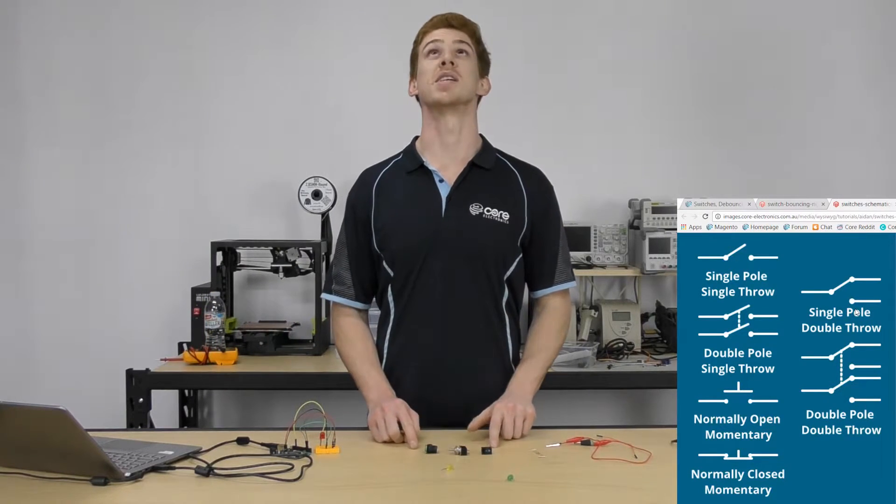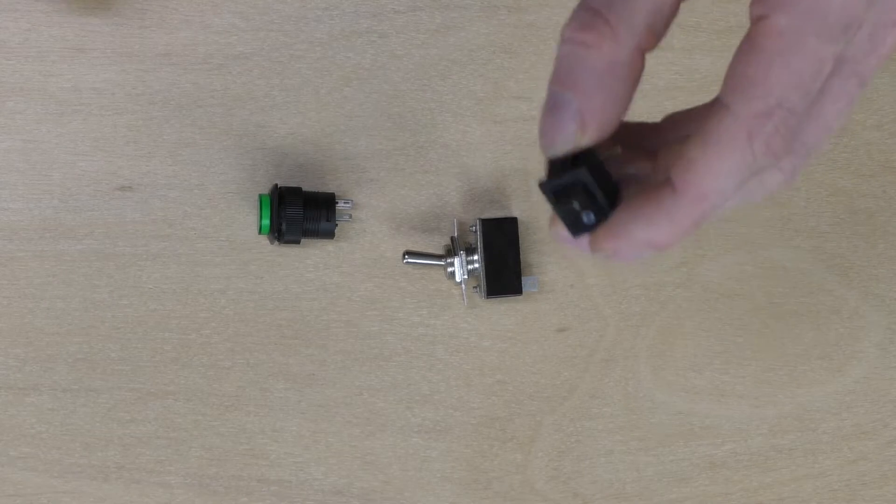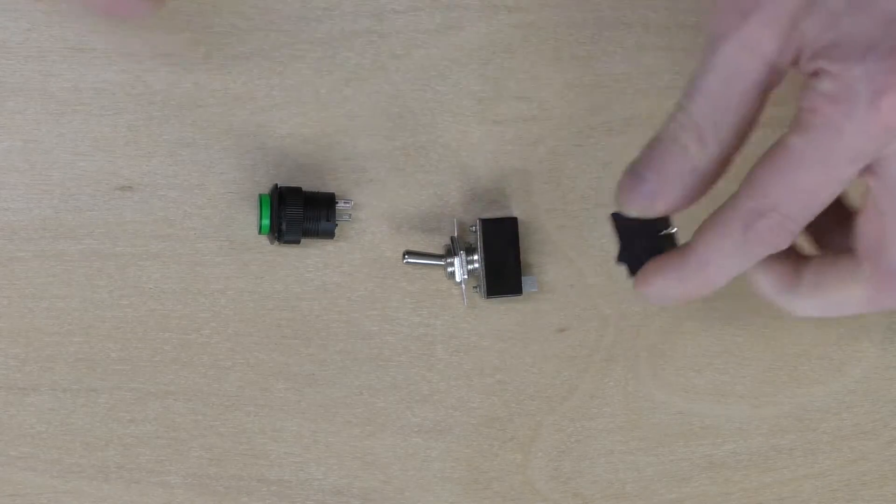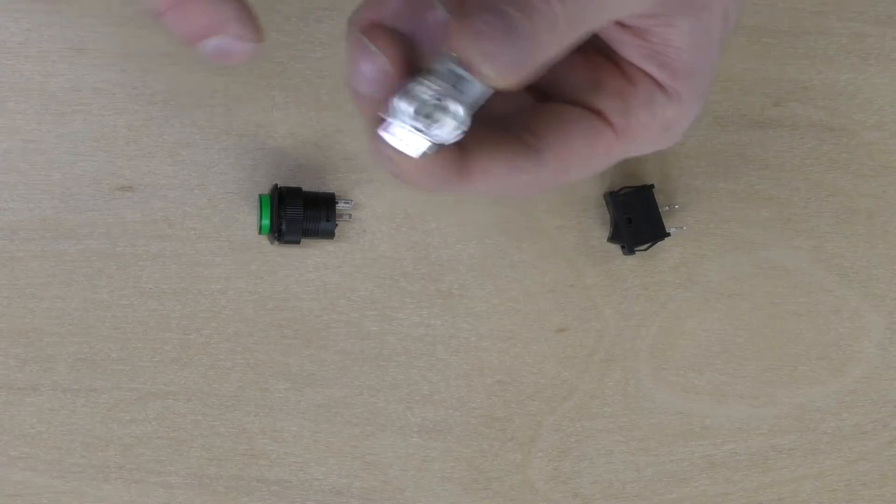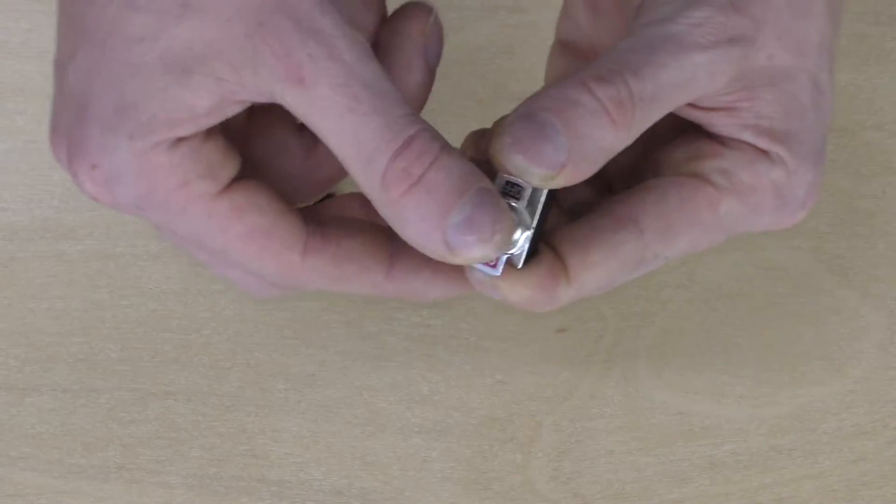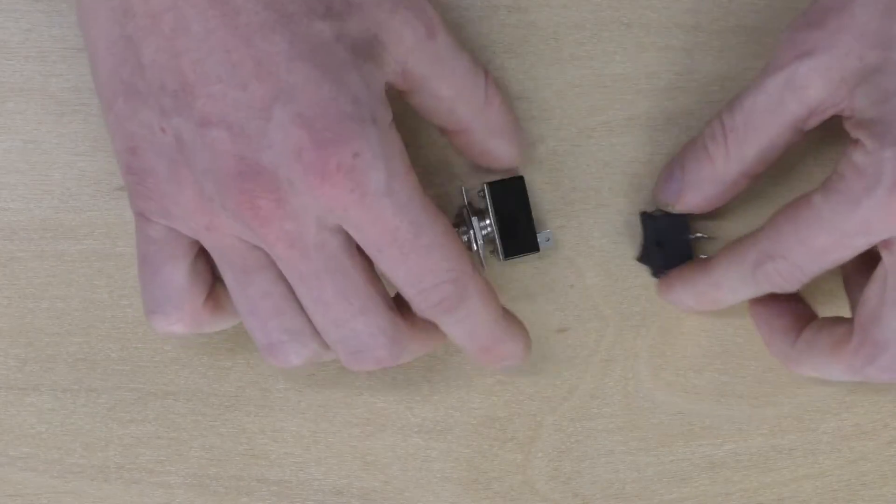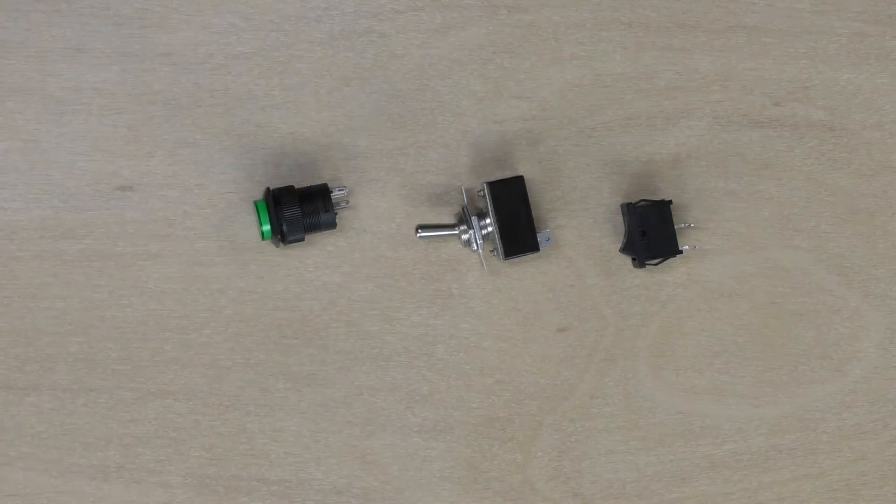I've got three switches here that we're going to take a quick look at. I've got the rocker switch, which is just a single pole single throw switch with an on-off state. I've got the toggle switch here, which is the same sort of thing, and you can essentially put these switches in series or something like that and they'll just control current flow through the circuit.